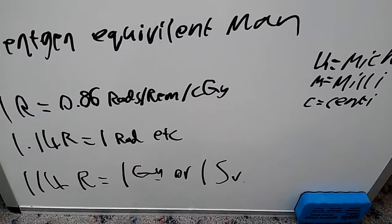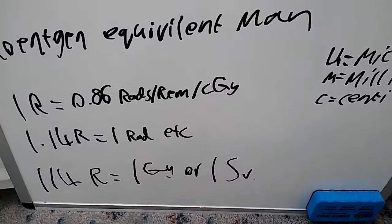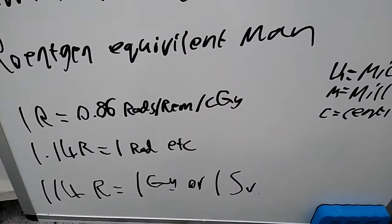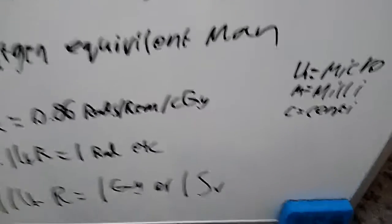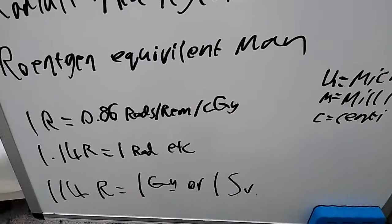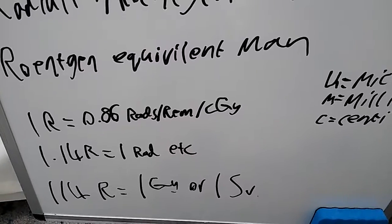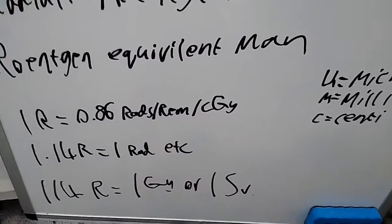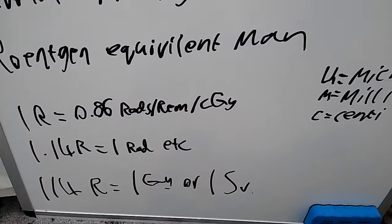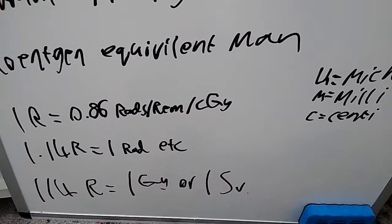So they would say 100R equals one Gray or one Sievert, and one Röntgen would be equal to one RAD, for example. They don't actually equal out, because that's why they're different units. But the easy way of thinking of it is one RAD, one Centigray, one Centisievert, but you never really see the Centisievert, or one Rem is always equal to 1.14 Röntgen.